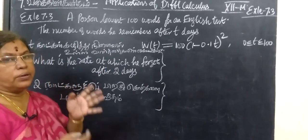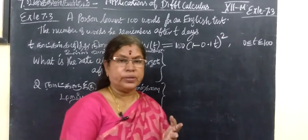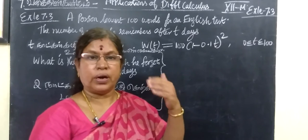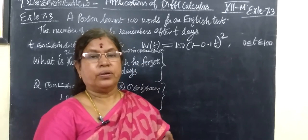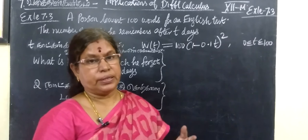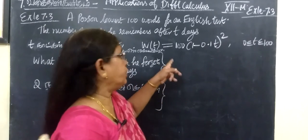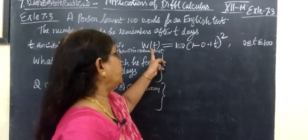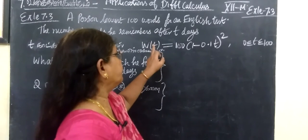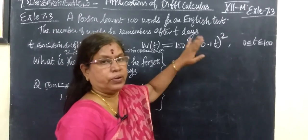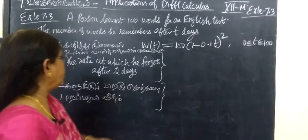He is learning 100 words, then the number of words next day, automatically words come back. After some number of days, the number of words he remembers equals W(t), where t is the number of days. The formula is given. We have to find after two days.